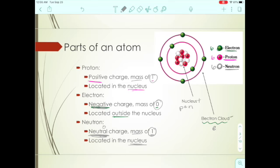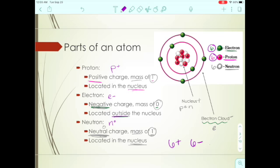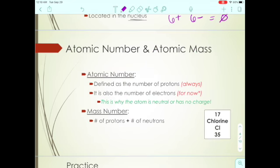To summarize symbols: protons are p+, electrons are e−, and neutrons are n0. In our diagram we had six electrons and six protons — six positives and six negatives add up to zero. That's why the atom overall is neutral: the electrons and protons cancel each other out. When you look at the periodic table, each element has a box with a couple of numbers, a name, and a symbol.